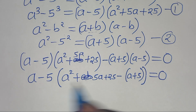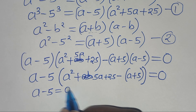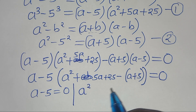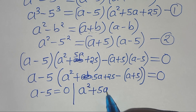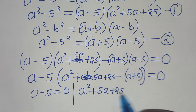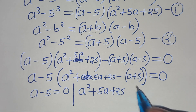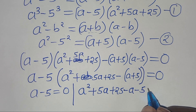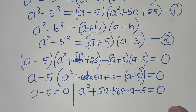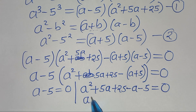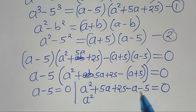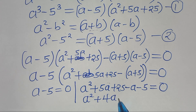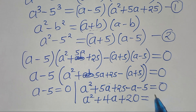We have two parts here. The first part gives a minus 5 equals 0. The second part is a squared plus 5a plus 25, and we open the parentheses: minus times a is minus a, then minus times plus 5 is minus 5, this is equal to 0. This simplifies to a squared plus 4a plus 20, this is equal to 0.